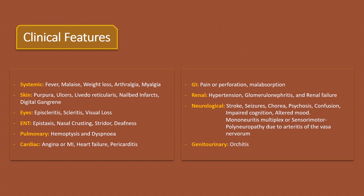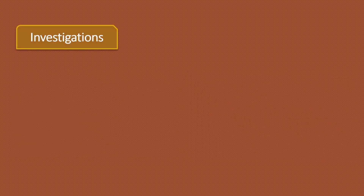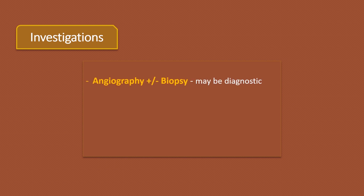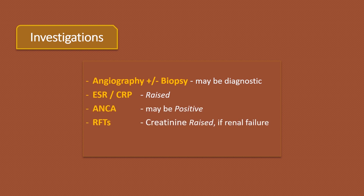In genitourinary involvement, the patient may present with orchitis. Diagnostic tests include angiography and/or biopsy of the involved organ. Other tests which support the diagnosis include raised ESR and CRP. ANCA may be positive. Raised creatinine if there is renal failure. Urinalysis may reveal proteinuria, hematuria, and casts on microscopy.